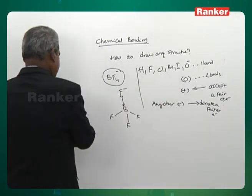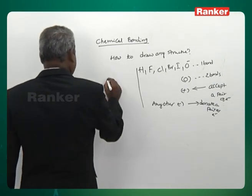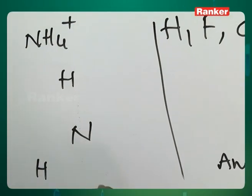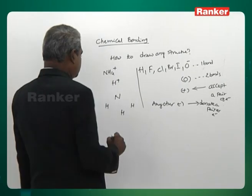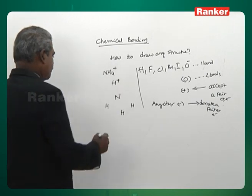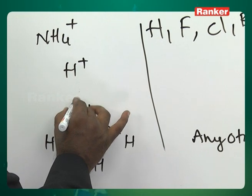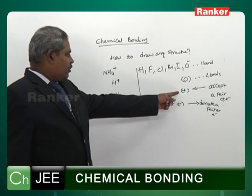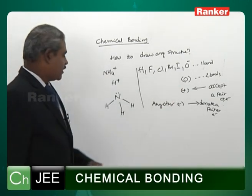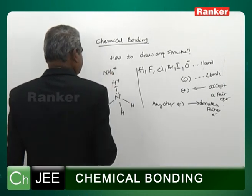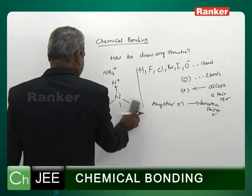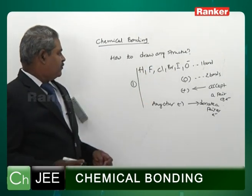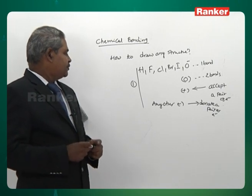NH4⁺: one nitrogen, four hydrogens. Hydrogen forms one bond. What is the role of plus in a group? A plus accepts a pair of electrons. So this is the first principle: H, F, Cl, Br, I, O⁻ form one bond; oxygen forms two bonds; plus accepts a pair of electrons; minus donates a pair of electrons.